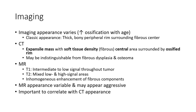On MRI T1, there is intermediate to low signal throughout the tumor. On T2, there are mixed low and high signal areas, with inhomogeneous enhancement of fibrous components. MRI appearance is variable and may appear aggressive, so it is important to correlate with CT appearance.